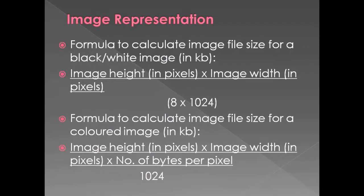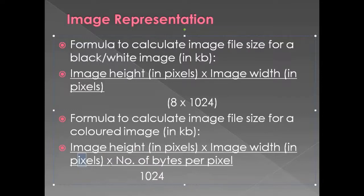The formula to calculate image file size for a black and white image is: image height × image width ÷ 8 ÷ 1024 to find the size in kilobytes. The formula for a color image is: image height in pixels × image width in pixels × number of bytes per pixel (color depth in bytes) ÷ 1024 to find the size in kilobytes. Since the color depth is already in bytes, you don't need to divide by 8.